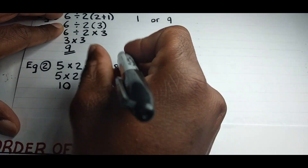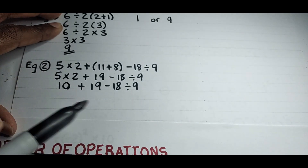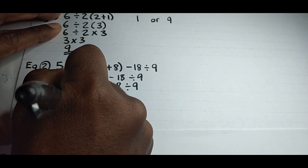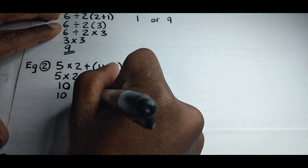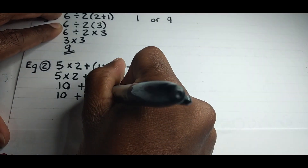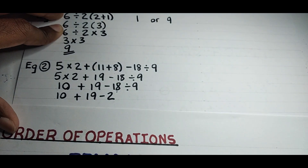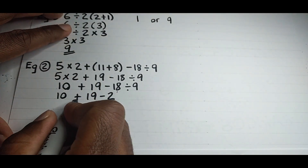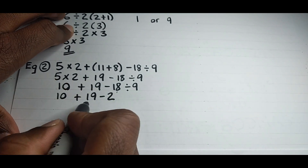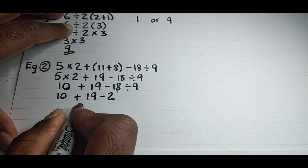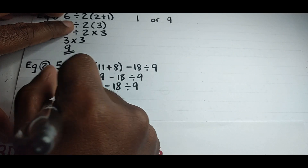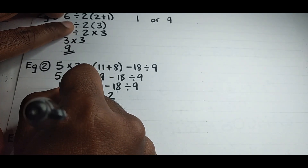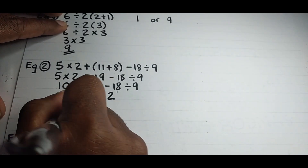Now we handle the division: 18÷9 = 2. So the expression becomes 10 + 19 − 2. For addition and subtraction we also work left to right: 10+19 = 29, then 29−2 = 27. So the answer for example two is 27.